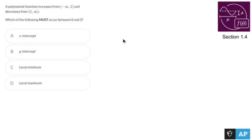Okay, let's look at this random problem from AP Precalculus section 1.4. A polynomial function increases from negative infinity to one, that's an interval, and decreases from one to infinity. Which of the following must occur? So this is not that bad of a problem at all.